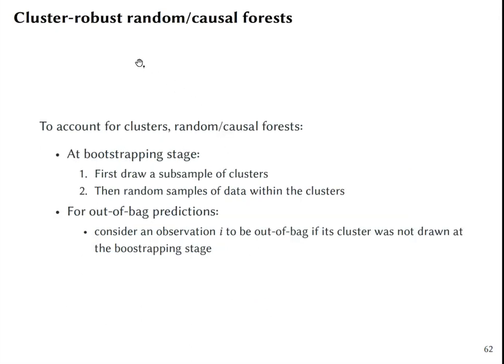So how does random forest or causal forest become cluster robust? It accounts for clustering at bootstrapping stage. First it draws a subsample of clusters, meaning schools, and then it randomly samples data within those sampled schools. And then for out of bag predictions, it considers an observation i to be out of bag if its cluster was not drawn at the bootstrapping stage. So it only predicts for students from other schools.